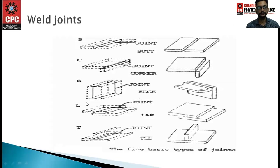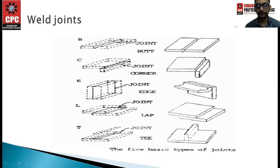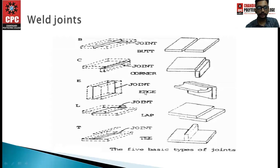Welding joints include: butt joint, where two plates are placed opposite to each other; corner joint; edge joint; lap joint, where plates overlap each other; and T-joint.